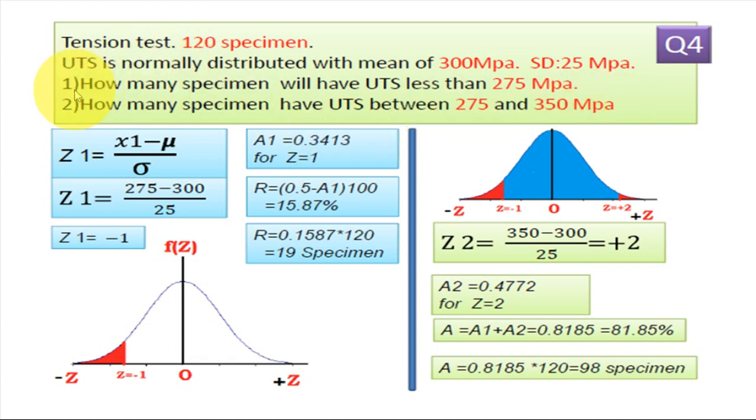Now first of all we solve case 1. How many specimen will have ultimate tensile strength less than 275 MPa. So we consider x1 equal to 275 MPa. So we find out standard variable z1, z1 equal to x1 minus mu by sigma. This is standard formula.